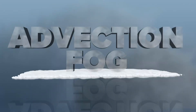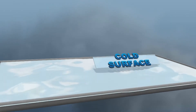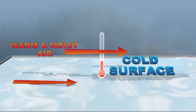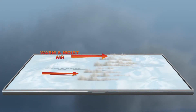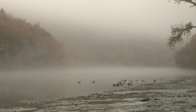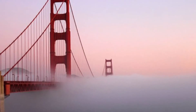Some other types of fog. Advection fog — advection means the transport of air horizontally. When warm air rides over a cool surface, fog is formed. This fog is most common on the Pacific coast; this is the fog that you see around the Golden Gate Bridge.